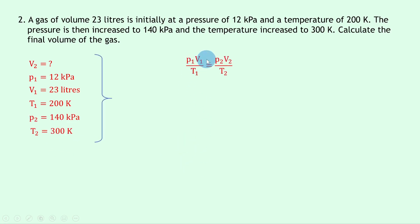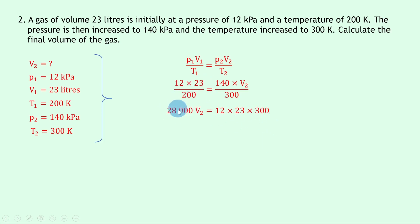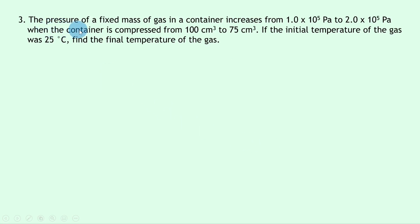Writing down the general gas equation: p1·v1 / t1 = p2·v2 / t2. Substituting in gives (12 × 23) / 200 = (140 × v2) / 300. Cross multiplying: 140 × v2 × 200 = 12 × 23 × 300, so 28000·v2 = 12 × 23 × 300, where 28000 comes from 200 × 140. Putting the right-hand side into the calculator and dividing by 28000 gives a final answer of v2 = 3.0 litres.